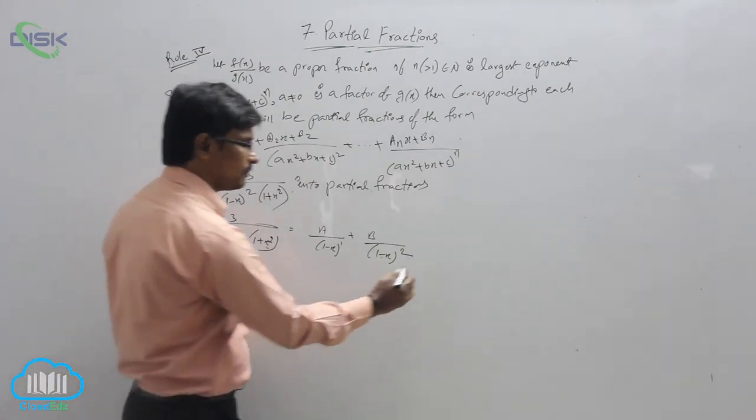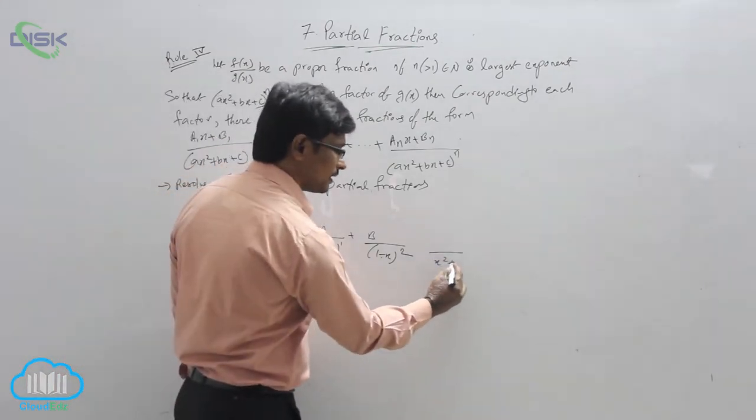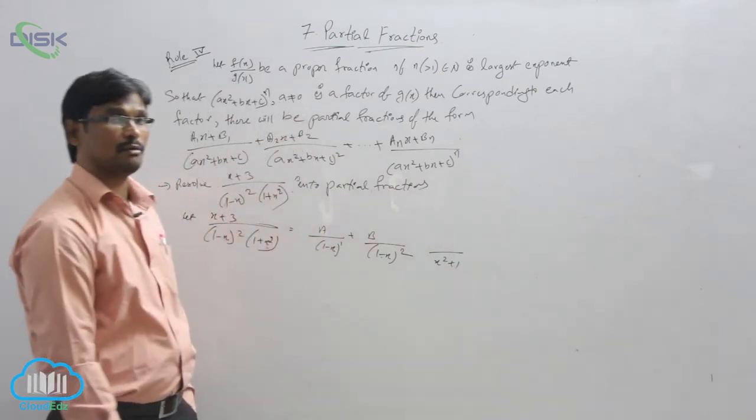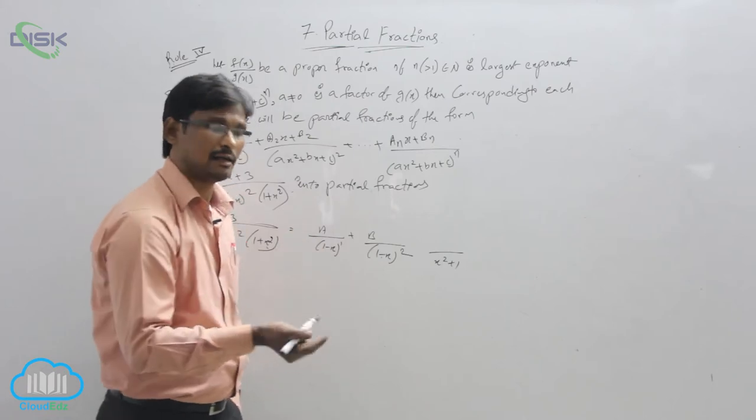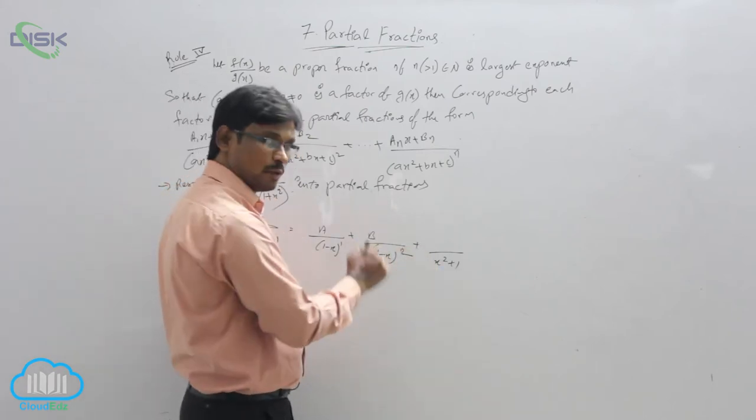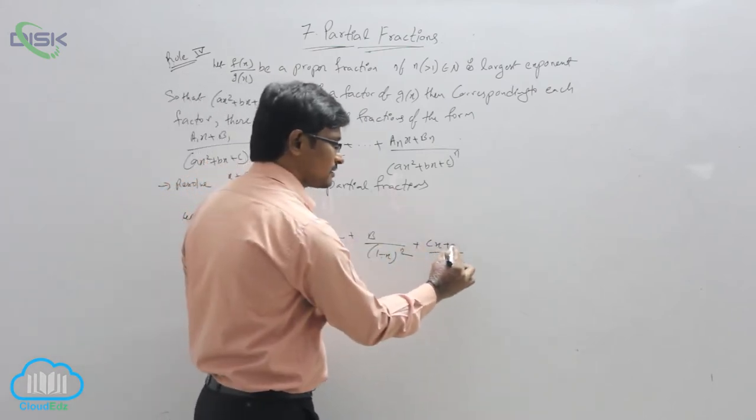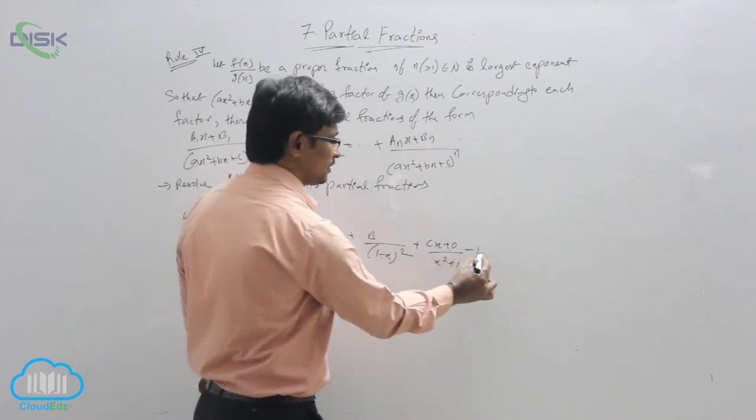And what is the third part? Here we have x² plus 1, that is the denominator in the form of quadratic. So we need to write in numerator linear. So what is the linear? cx plus d is the equation number 1.